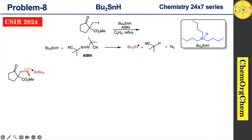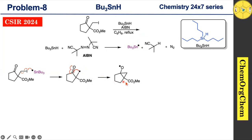This homolytic cleavage produces a carbon-centered radical. This carbon-centered radical then reacts with the carbonyl carbon, resulting in the formation of a new oxygen-centered radical containing a bicyclic system. This system has a three-membered ring.